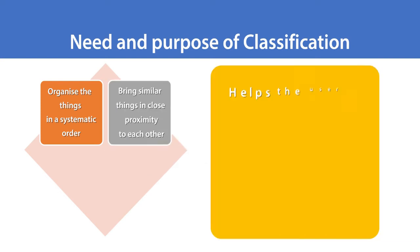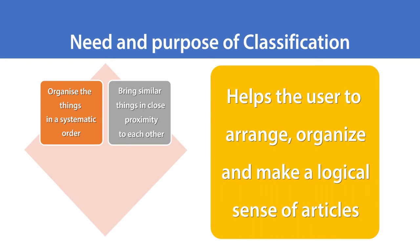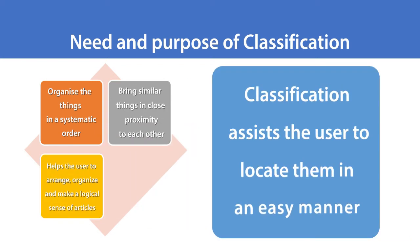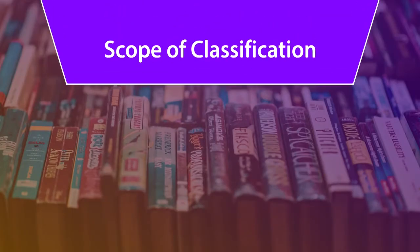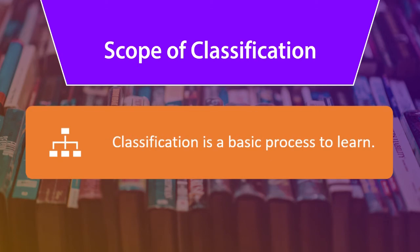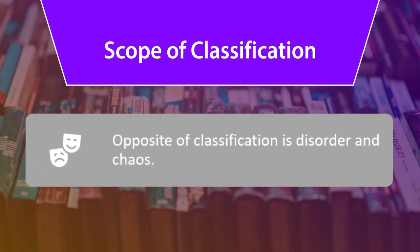This process helps the users to arrange, organize and make a logical sense of things. Classification removes chaos or disorder and brings the things in order and assists the users to locate them in an easy manner. So, what is the scope of classification? This is also very important to know. There is no act of life where classification is not used. It is applied everywhere. It is a basic process of learning. The opposite of classification is disorder and chaos.